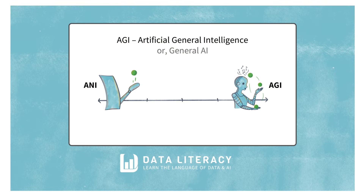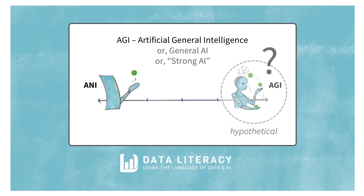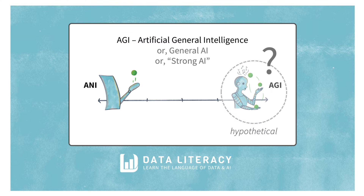Next up is Artificial General Intelligence, or AGI. This is a hypothetical AI that could perform any intellectual task that a human being can. A single instance of AGI could be capable of learning, understanding, and applying knowledge in completely new ways — bridging the gap across all human capabilities, from image detection and language processing to reasoning, problem solving, and decision making across many different domains. This type of AI doesn't exist yet; that's why we call it hypothetical, and it may never exist. It's sometimes also referred to as strong AI, in contrast to weak AI.